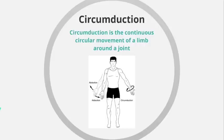Finally, we have circumduction — probably a term you have not heard of before. Circumduction is the continuous circular motion of a limb around a joint, and it is important not to confuse this with rotation. A good example at the shoulder would be the arm action during front crawl swimming — the arms moving round, forwards and upwards, bringing the hand forwards to pull, completing this continuous circular motion.